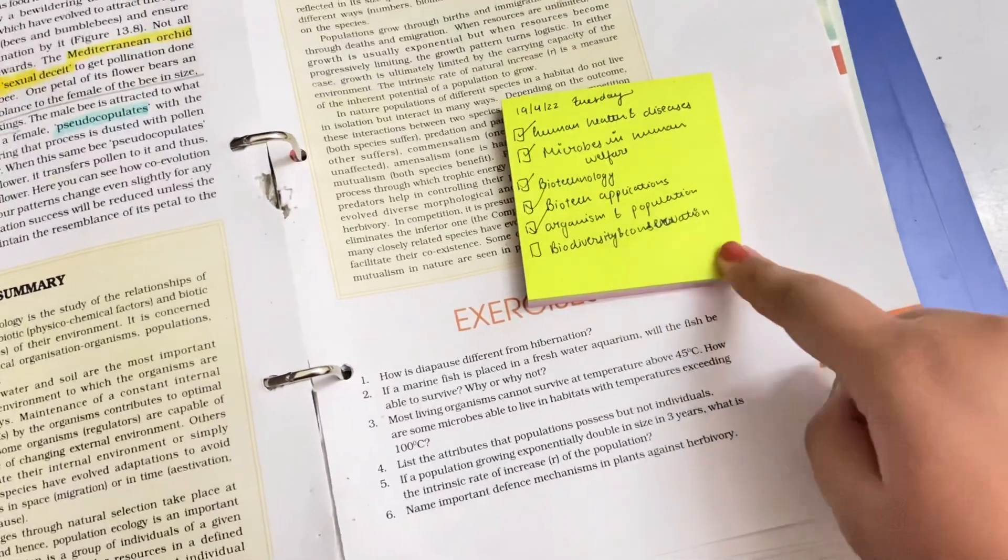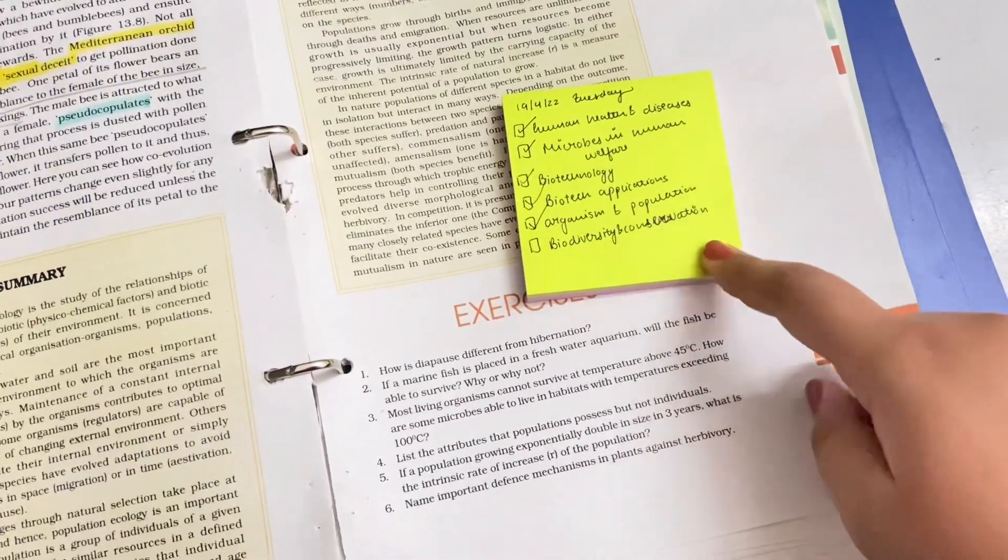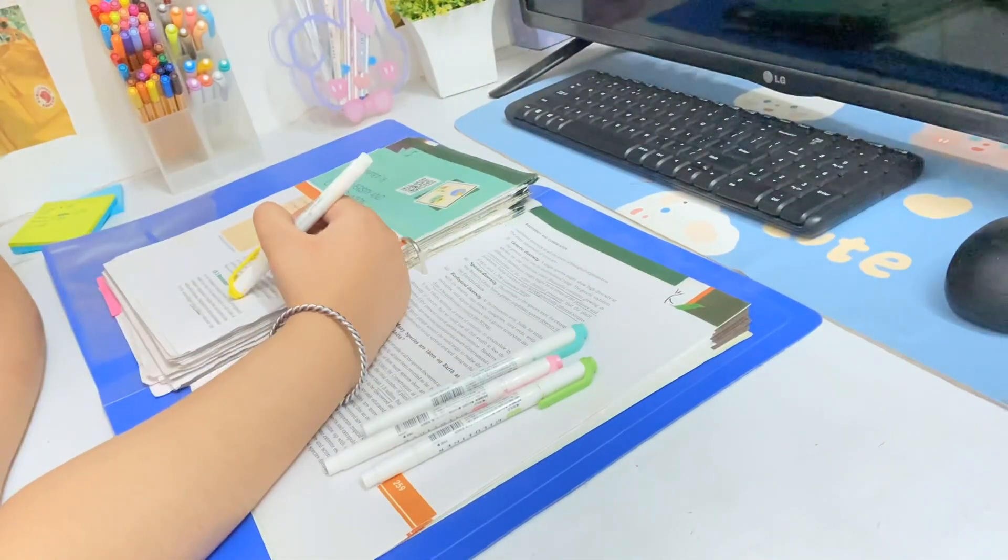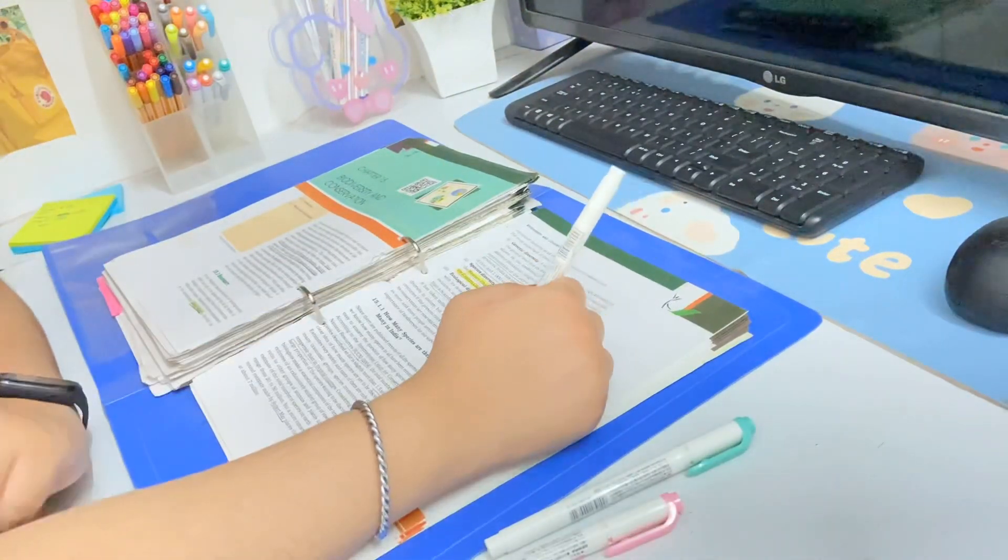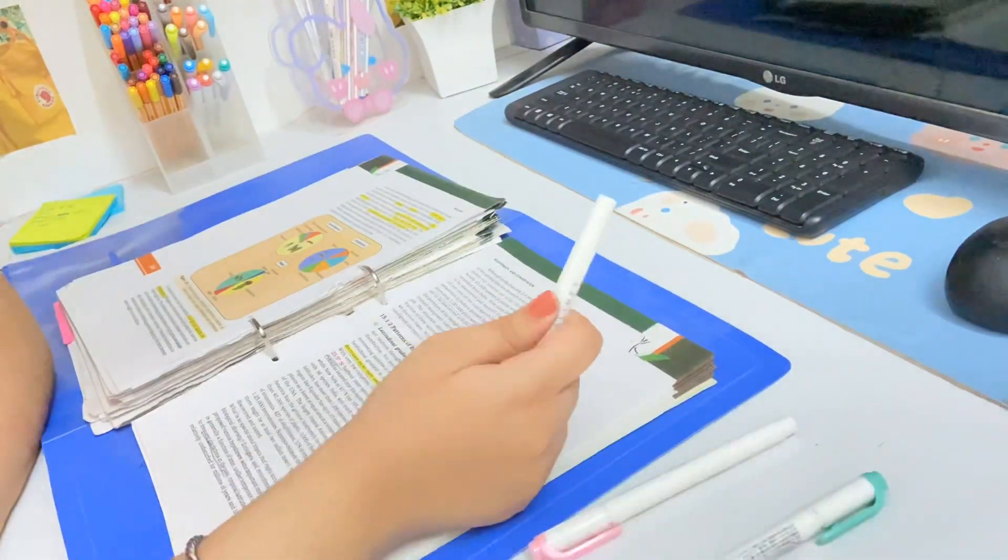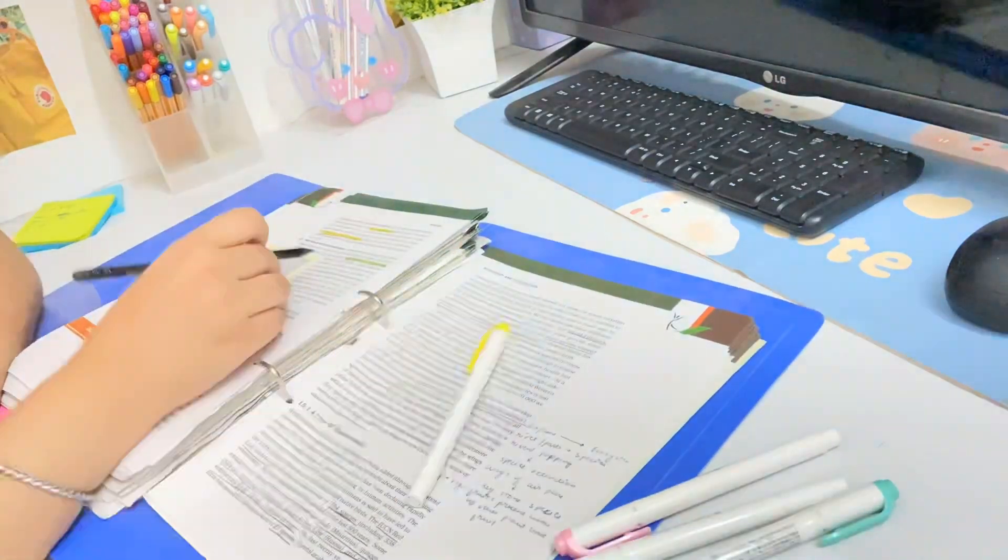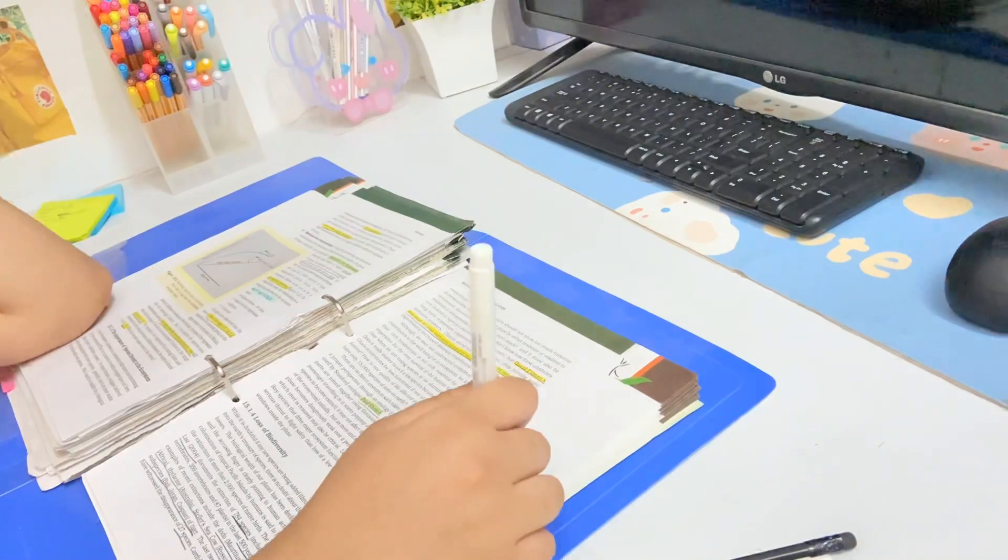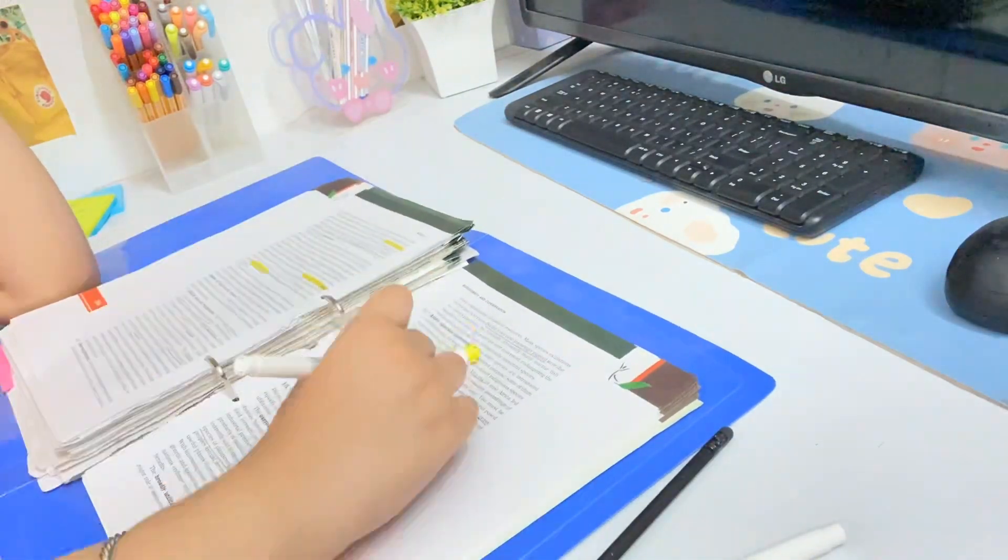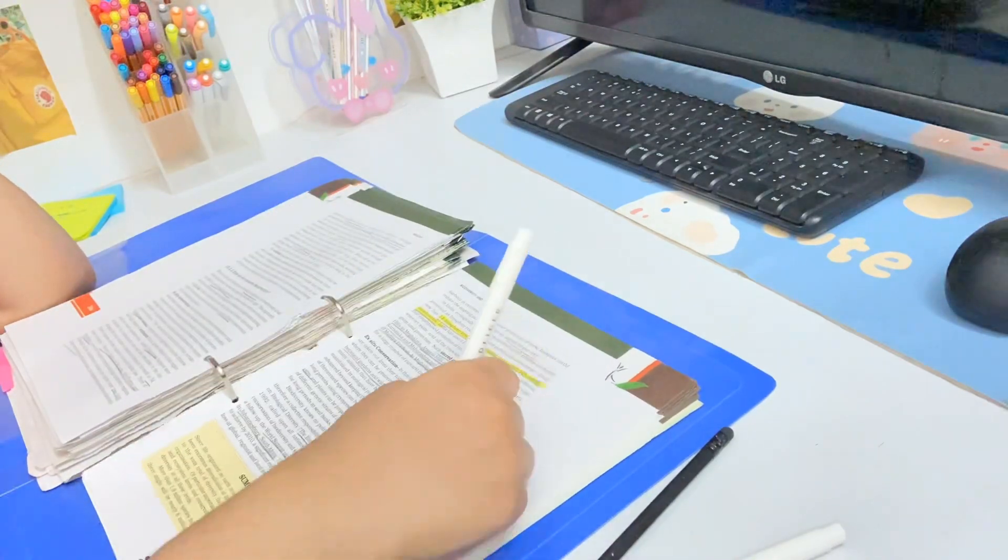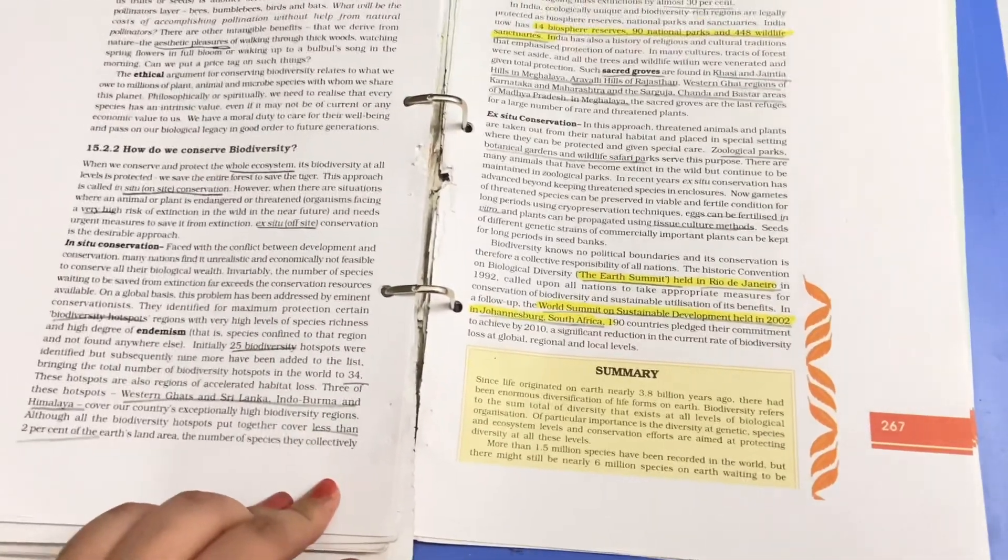So I'm only left with one chapter which is Biodiversity and Conservation. Right here I'm doing the chapter known as Biodiversity and Its Conservation. This is again a very easy chapter. Before starting with this video I thought that completing entire biology will take the whole day, but I don't know how it took only like seven to eight hours to revise entire biology which was very easy as well. I'm done with this biodiversity chapter as well.